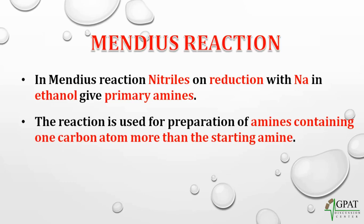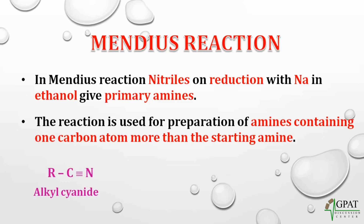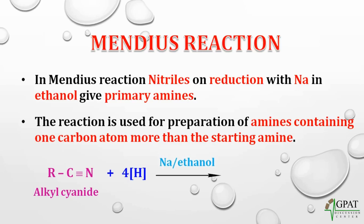The carbon number of the amines produced will be one more than the carbon number of the starting materials. Suppose this is our alkyl cyanide. This alkyl cyanide on reduction with hydrogen in the presence of sodium and ethanol — primary amines will be formed. Let us understand these reactions with an example.